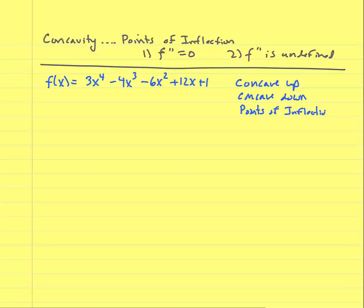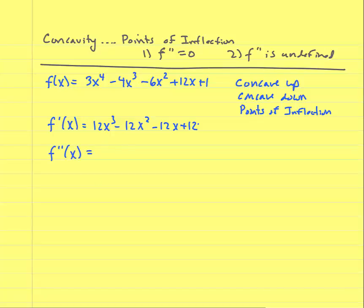Starting with the first derivative: f′(x) = 12x³ − 12x² − 12x + 12. I notice a common factor of 12. But I need to find the second derivative for concavity. The second derivative is f″(x) = 36x² − 24x − 12. Since this is a polynomial, possible points of inflection only occur where this equals zero.